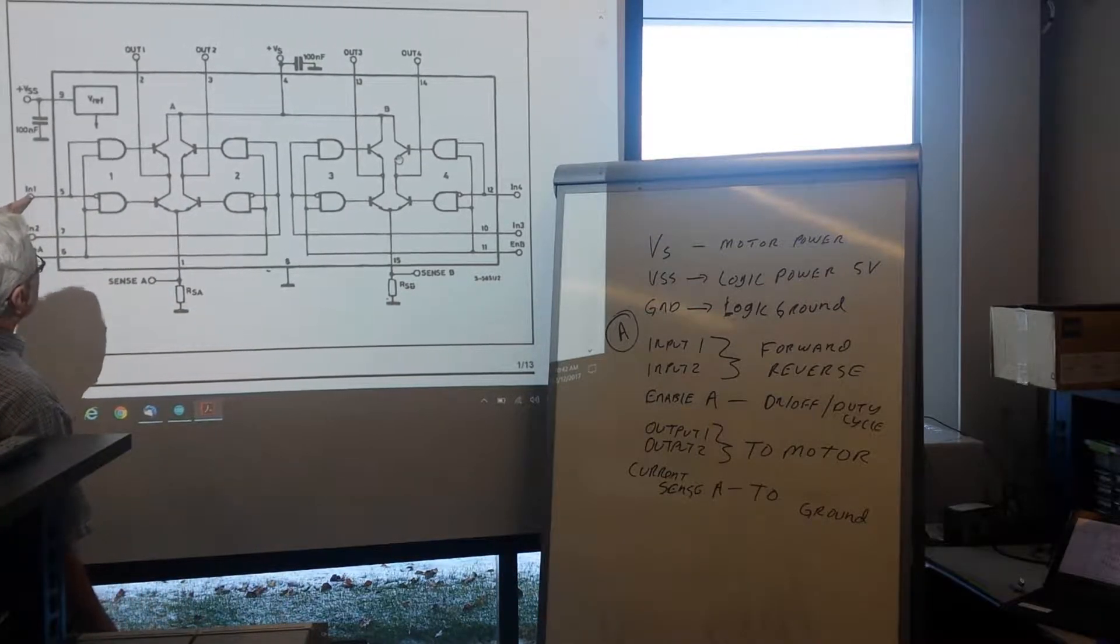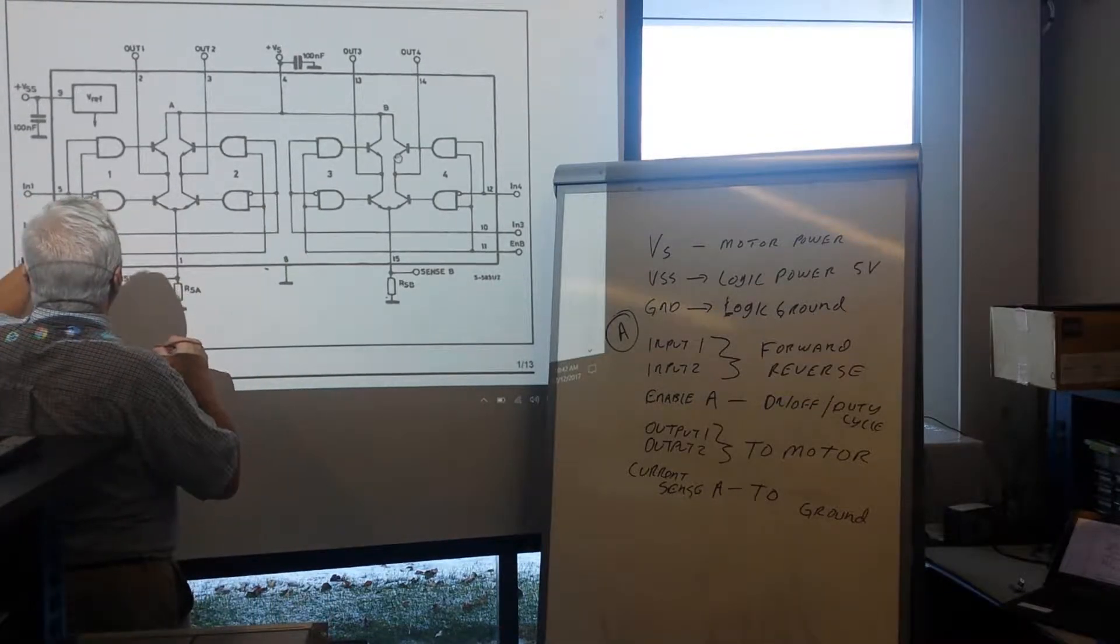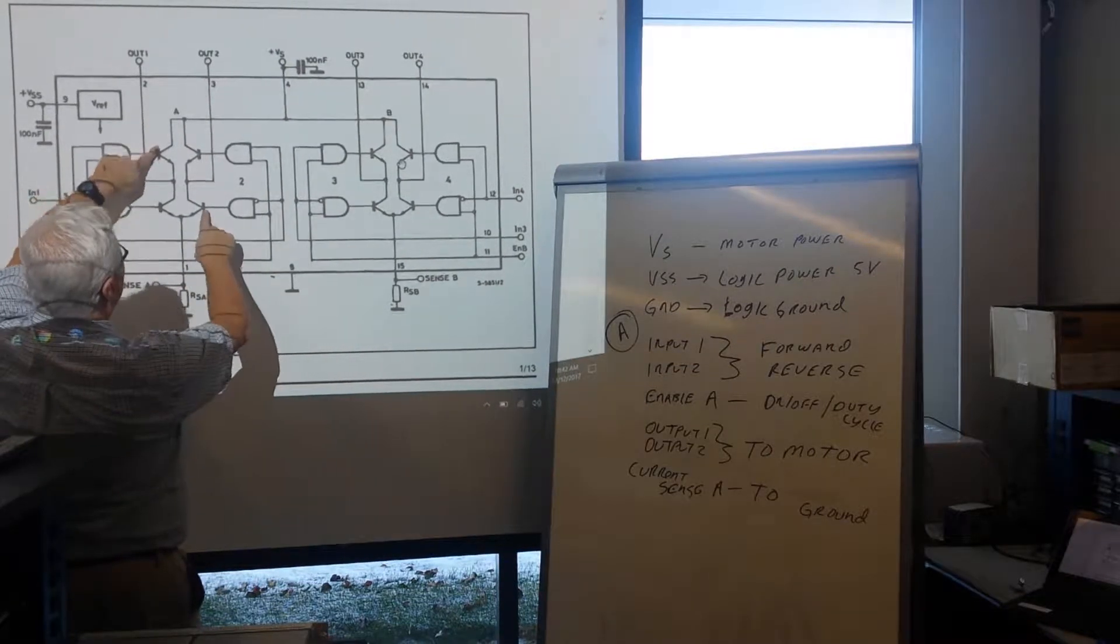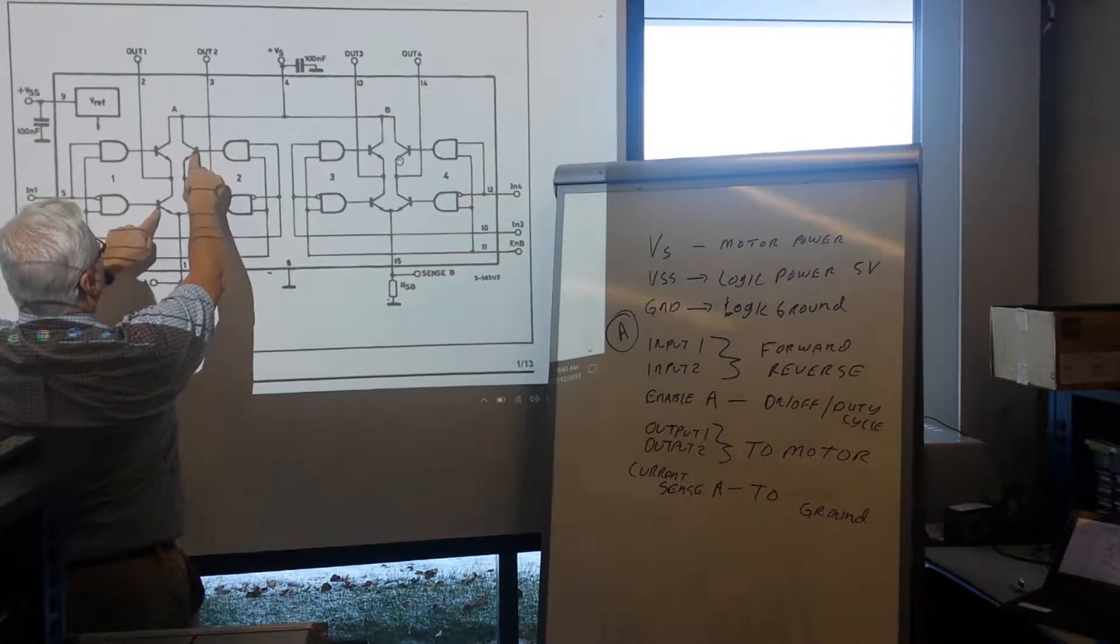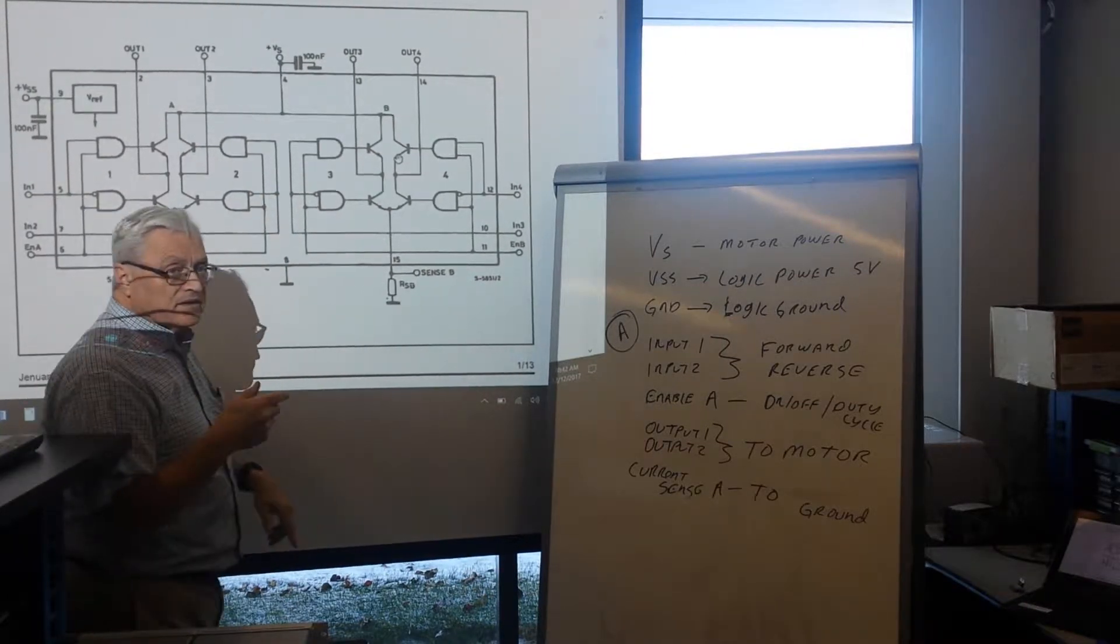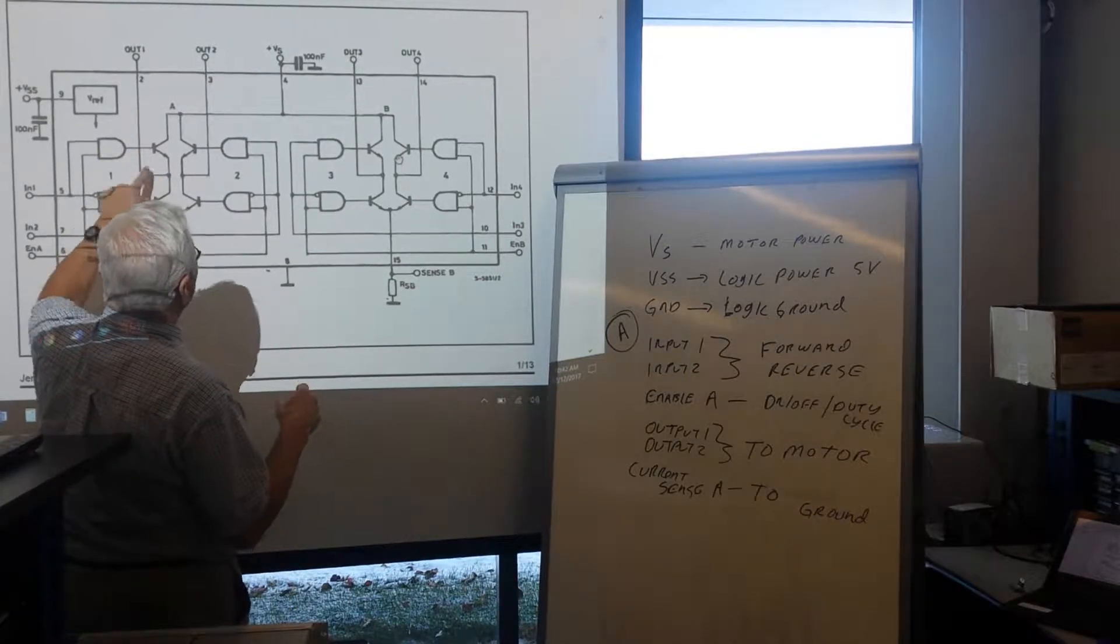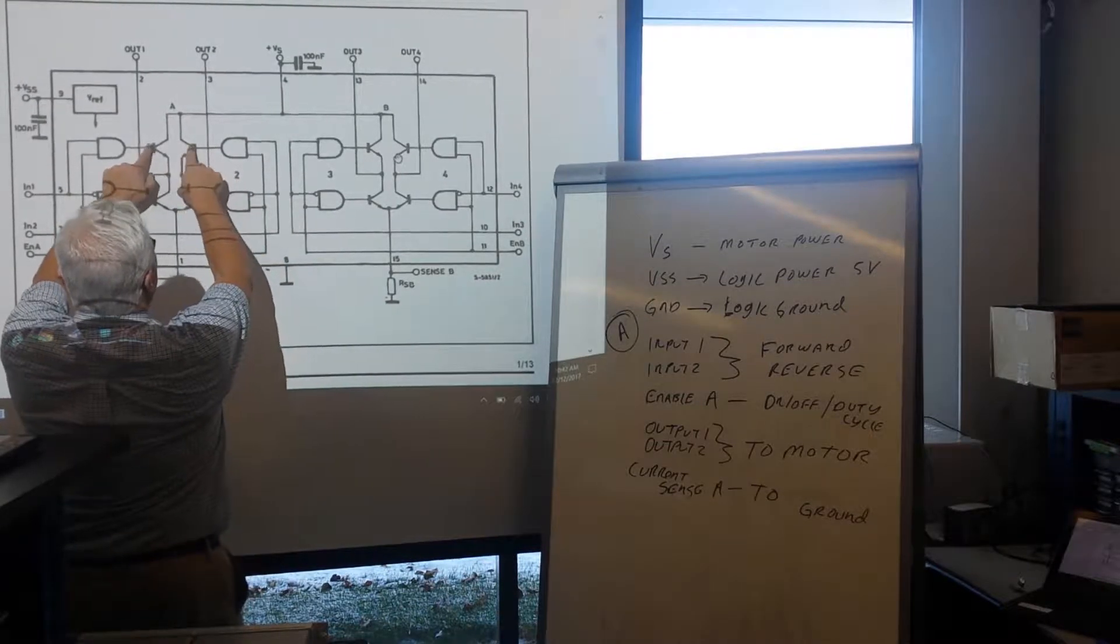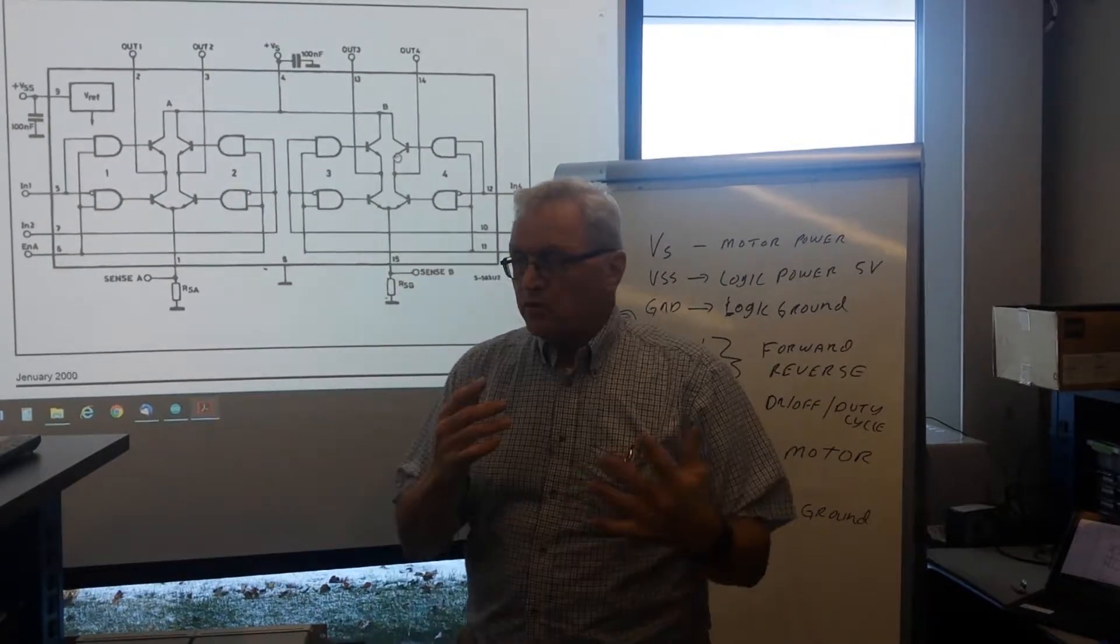So here, input one, input two, these are set up, so if I turn on input one, I will turn this one on and this one on. And if I turn on input two, I turn those two on. And they're cross-connected in here to make sure that I can't turn both of these on at the same time. If I turn both of these on at the same time, I just get these two on and these two off because of that not gate. So it's protected against really stupid things.